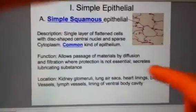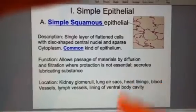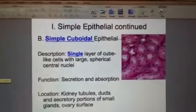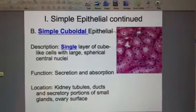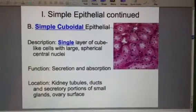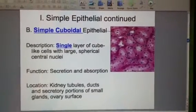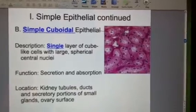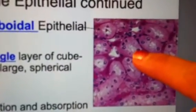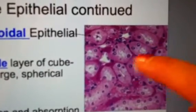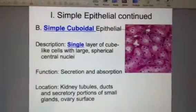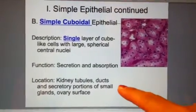Simple squamous epithelial performs several functions like diffusion, filtration, and secreting lubricating substances — things like mucus. The second type is simple cuboidal epithelial: a single layer of cube-like, very spherical cells that up close look like little boxes. These cells secrete and absorb, and they're found in different parts of the human body.